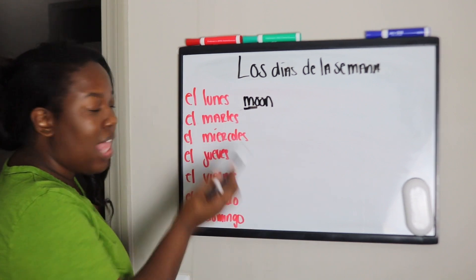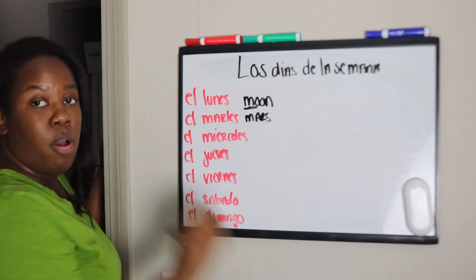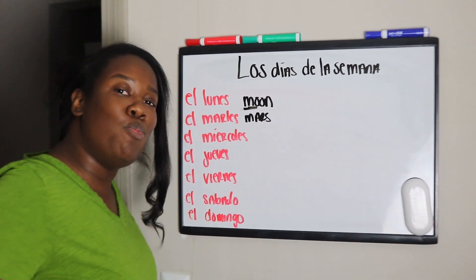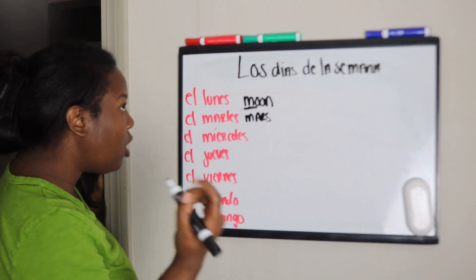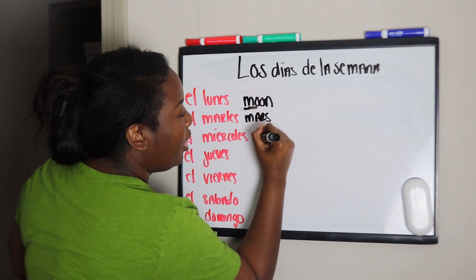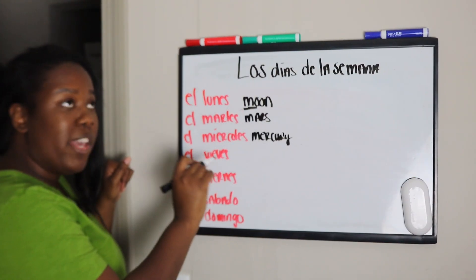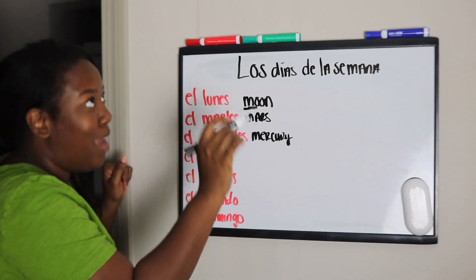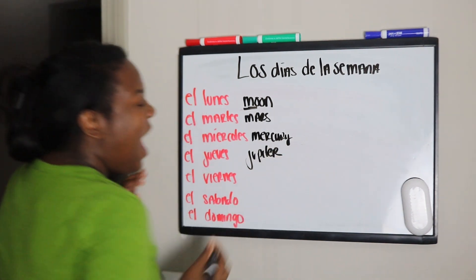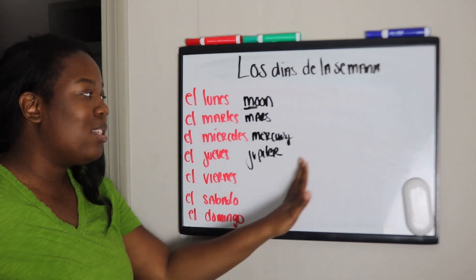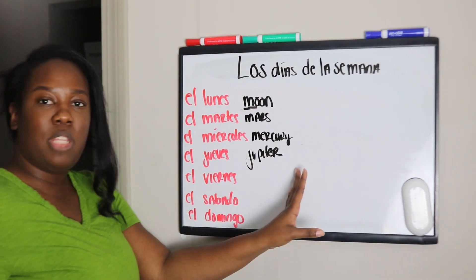Mark this — what does this look like? Come on, quit playing. Mars! Look at that, you got two days now. What's another M? Come on now, boo. Mercury! El miércoles — Mercury. You got it. Next, el jueves would start with a J — Jupiter! I just think Jupiter is a sexy-ass word. It's spelt beautifully. I love a J.